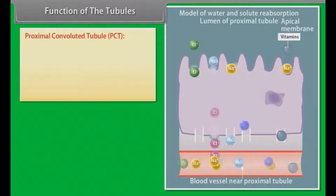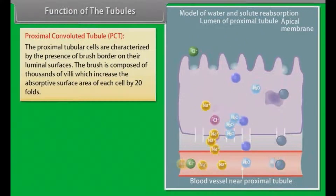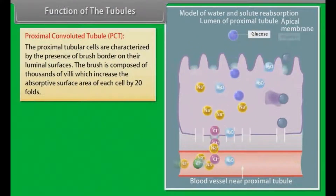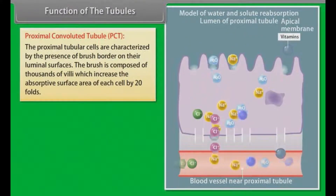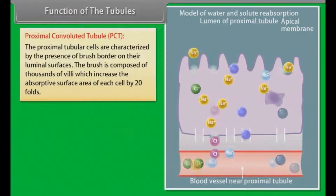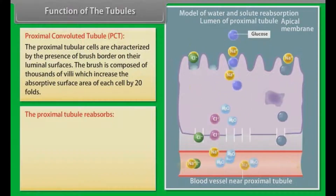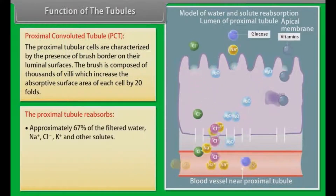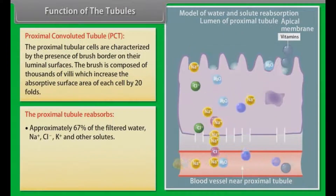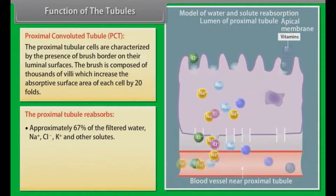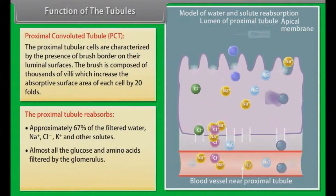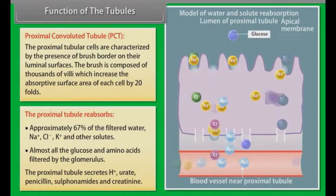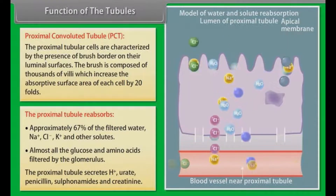Function of the tubules — Proximal Convoluted Tubule (PCT). The proximal tubular cells are characterized by a brush border on their luminal surfaces, composed of thousands of villi which increase the absorptive surface area of each cell by 20 folds. The proximal tubules reabsorb approximately 67% of filtered water, Na+, Cl-, K+ and other solutes, and almost all the glucose and amino acids filtered by the glomerulus. The proximal tubules also secrete H+, urate, penicillin, sulfonamides and creatinine.